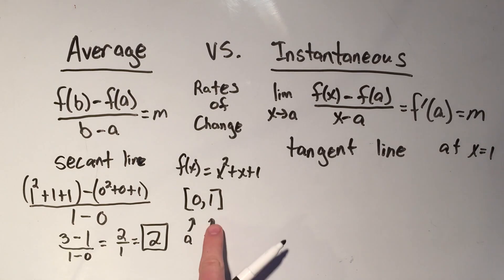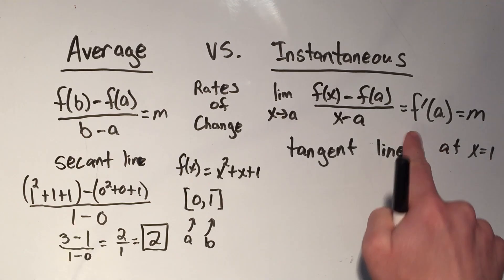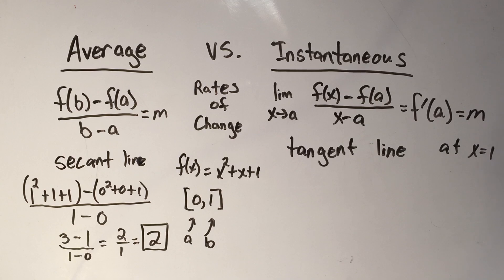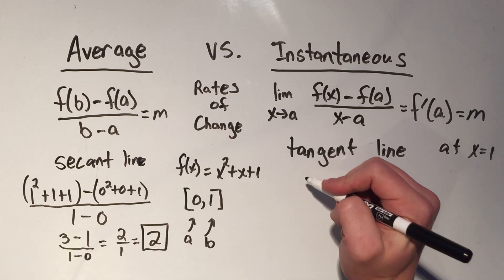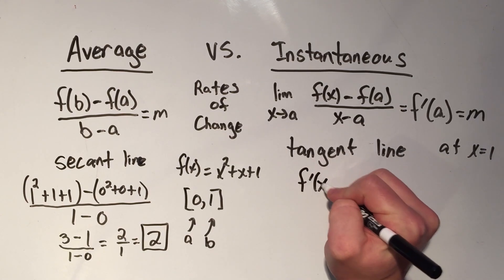So just at b basically here. And to find the instantaneous rate of change, I need to find the derivative. And if you haven't learned the shortcut methods for derivatives yet, you need to use the definition. And I'm not going to go through it in this video.